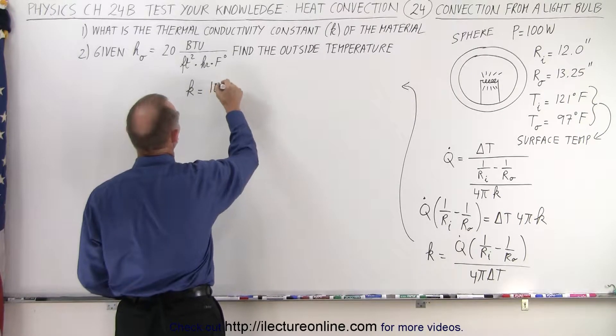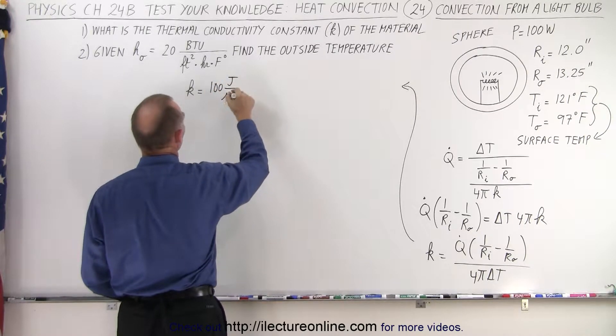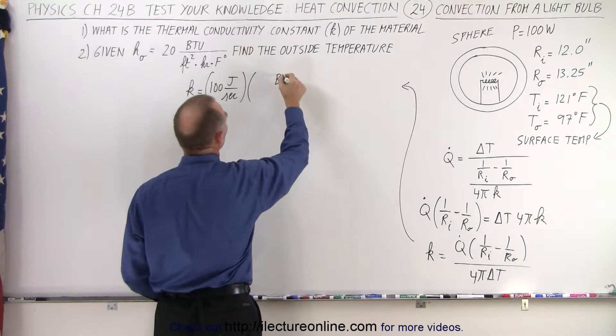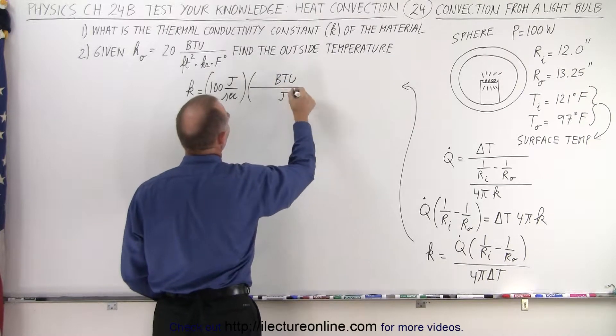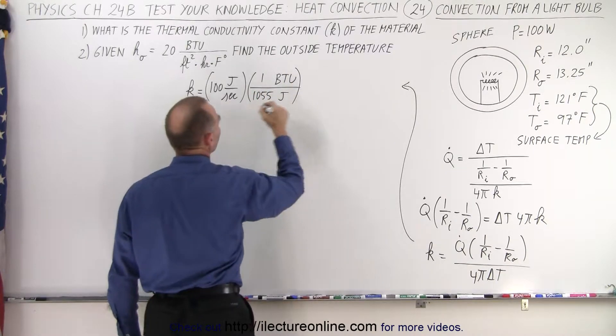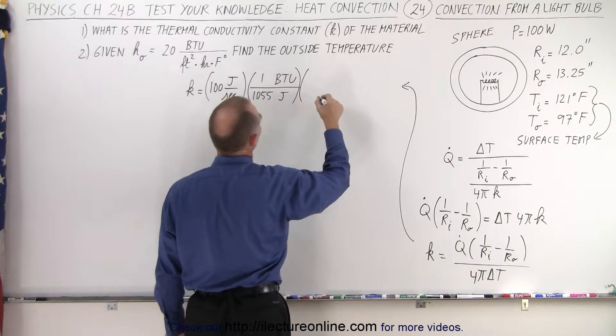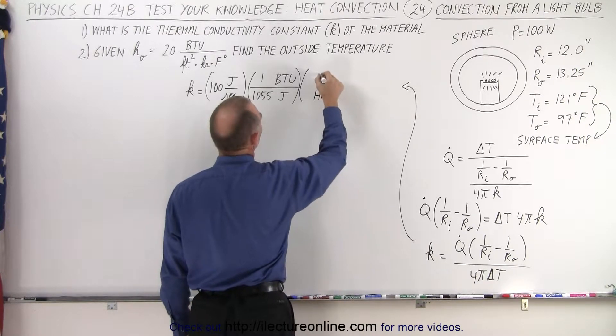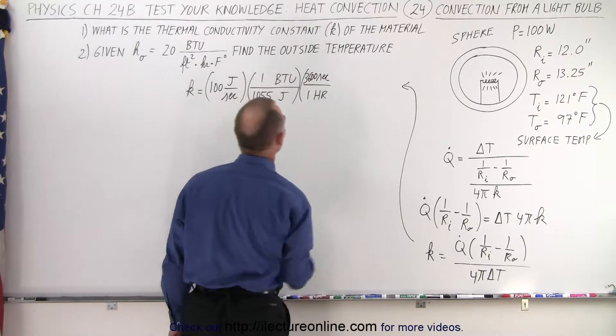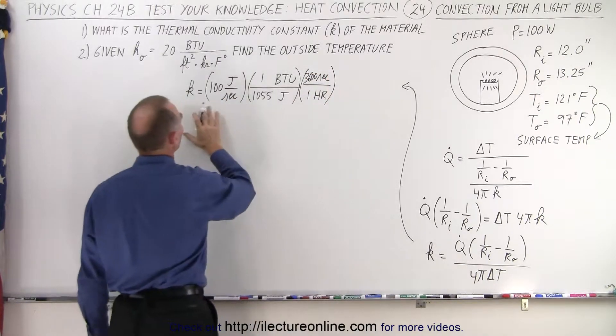So it will be 100 joules per second, but we have to convert that. First of all, we need to go to BTUs per joule. And one BTU is 1055 joules. And then we have to convert from seconds to hours. So we need hours in the bottom, we need seconds at the top, and one hour is 3600 seconds. So now we have converted Q dot to that.